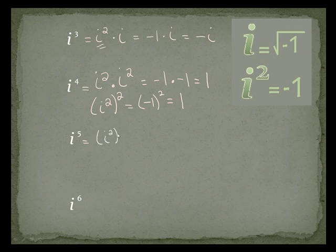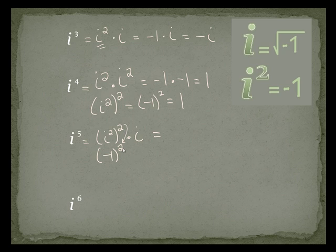i to the fifth: i squared to the second power gives i to the fourth, but I need one more for i to the fifth. So this is negative 1 squared times i. i squared is negative 1, and I don't change that remaining i. Negative 1 squared is 1, times i, which is i.